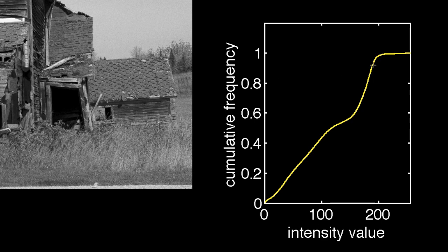For instance, at this location we can see that about 92.1% of the pixels have an intensity that is less than or equal to 189. At this location, we see that about 48.5% of the pixels have an intensity that is less than or equal to 112.